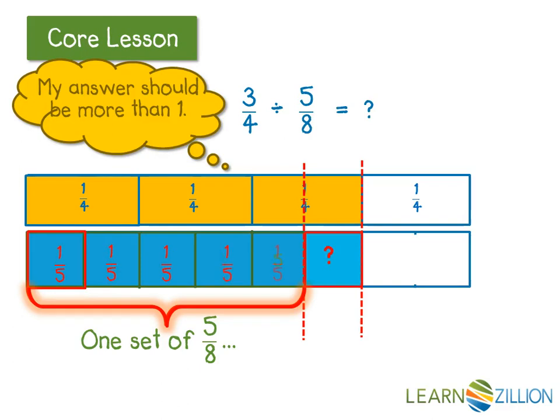If each of these parts is 1 fifth, then I know that this piece is also 1 fifth. So I could say that 1 and 1 fifth of 5 eighths fits.